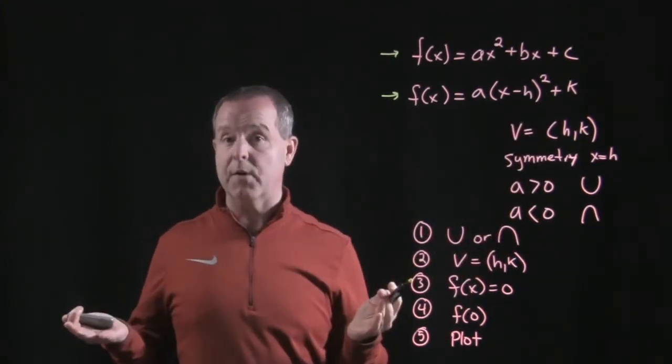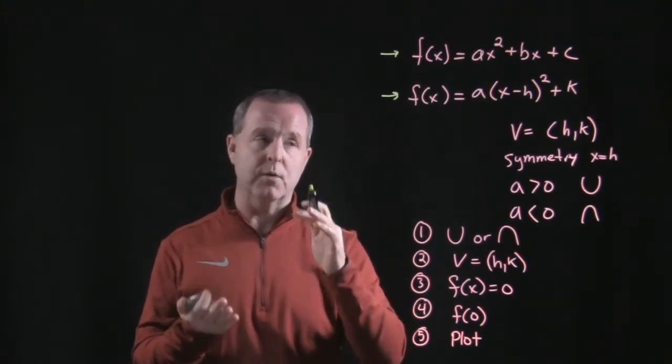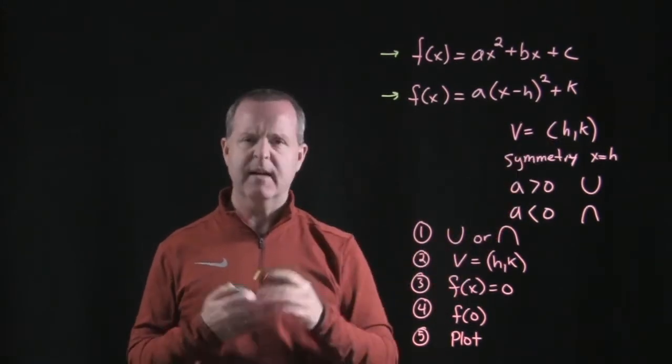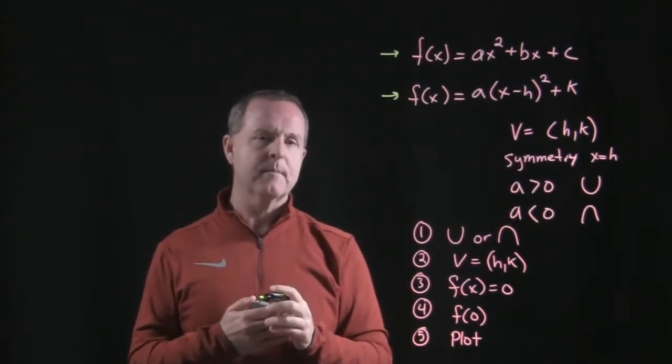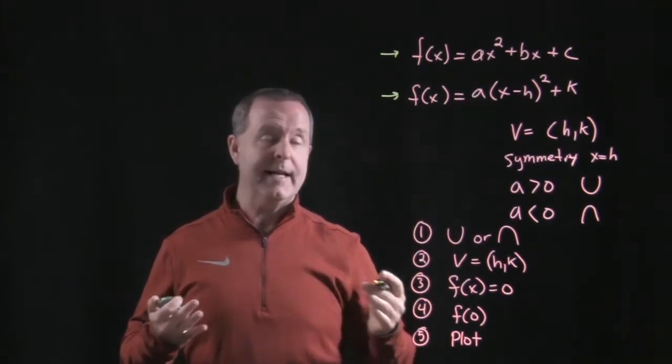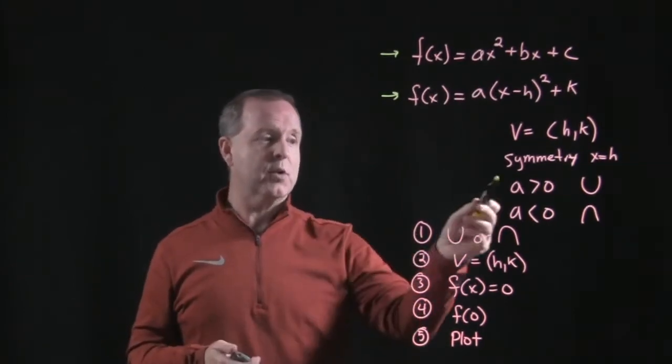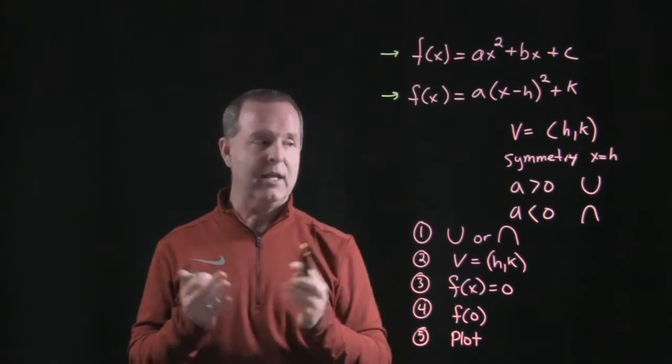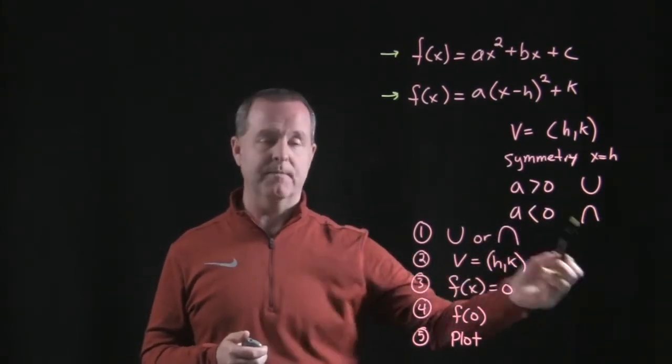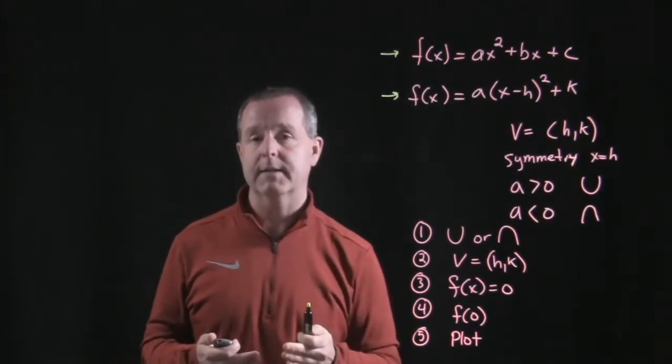Another thing I notice is the graph will be symmetrical about the line x equals h, which is the x point of the vertex. And that kind of makes sense. My value of a helps me determine if the graph will hold water or all the water falls out. So if it's positive, it looks like a U. If it's negative, then it's flipped upside down and all the water pours out.